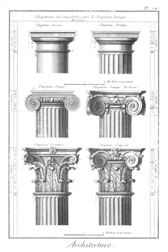Epinaus: open vestibule behind the nave. The term is not found in any classic author, but is a modern coinage originating in Germany, to differentiate the feature from the opisthodomos, which in the Parthenon was an enclosed chamber.